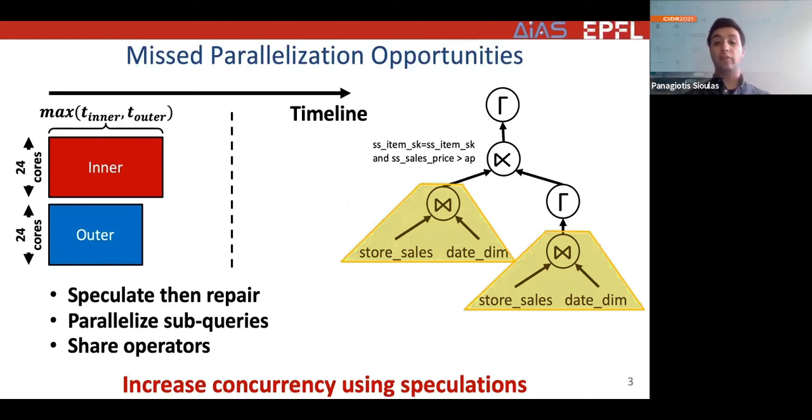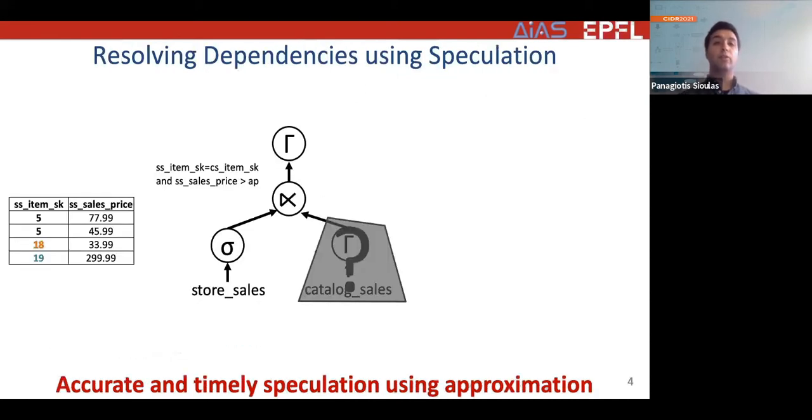In the rest of the presentation, I'm going to go through speculative execution step by step. First, we see how we resolve dependencies using speculation. This amounts to executing the outer part of the query without having access to the results of the inner part. For our example, the dependency works as follows: for every tuple that goes through the filter, let them be the table here, we have to compare the sales_price attribute with an aggregate from the inner part.